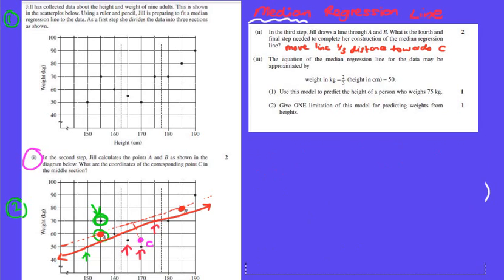The last step here says: The equation of the median regression line for the data may be approximated by the weight in kilograms equals two-thirds of the height in centimeters minus 50. Use the model to predict the height of a person who weighs 75 kilograms.